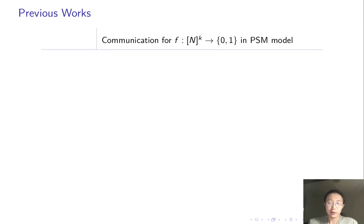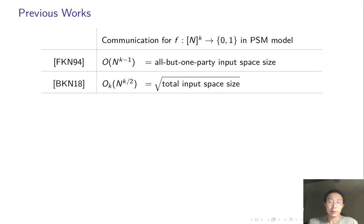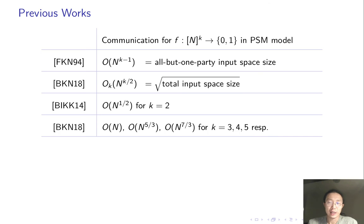In the paper that introduced PSM, Feige-Kilian-Naor achieves communication complexity n to the k-1, which can be interpreted as all but one party's input space size. Recently, Beimel-Kushilevitz-Nissim improved to the square root of total input space size.